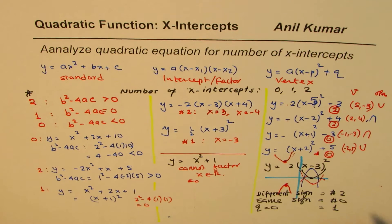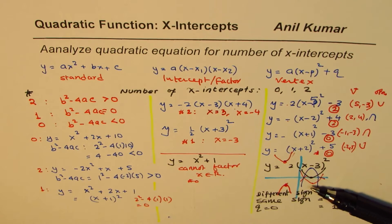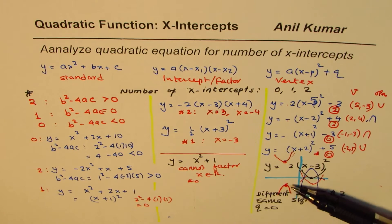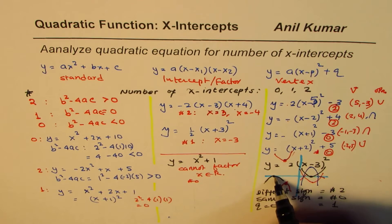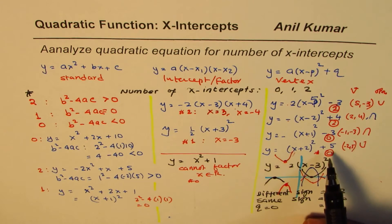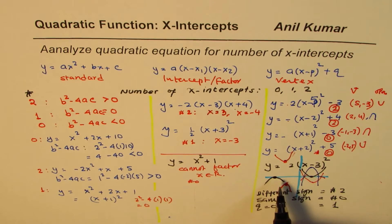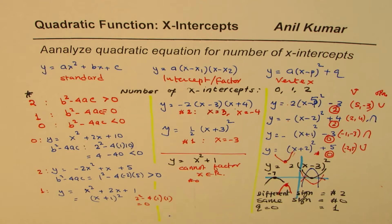So in vertex form, you can figure out the number of intercepts without any calculations: analyze where the vertex lies. If it is below the x-axis and opens upwards, you get 2 intercepts. If it opens downwards with vertex below, you get 0. If q = 0, you get 1. As an exercise, write an equation with only 1 x-intercept at x = -7.